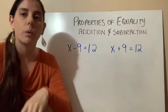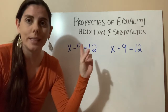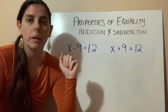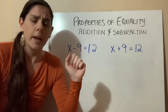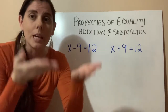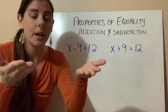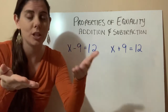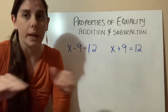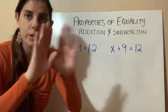The first thing we want to understand is our properties of equality. We're going to discuss addition and subtraction in section 2.3 — the addition property of equality and the subtraction property of equality. Basically, a property of equality means that whatever you do to one side of the equal sign, you have to do to the other. To keep an equation equivalent, if you're adding 5 to one side, you've got to add 5 to the other. You can't change one side without changing the other.